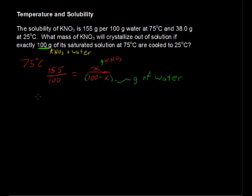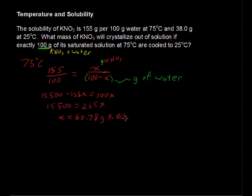Okay, running through this quickly. To solve this, I'm going to cross multiply and I get 15500 minus 155x equals 100x. And I'm going to write 15500 equals 255x. I'm going to put the x over here. And x equals 60.78 grams of KNO3. That's when it's hot.